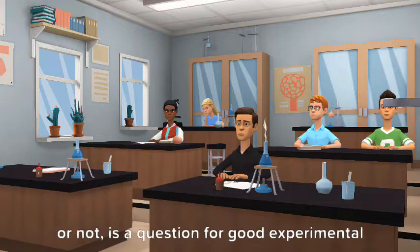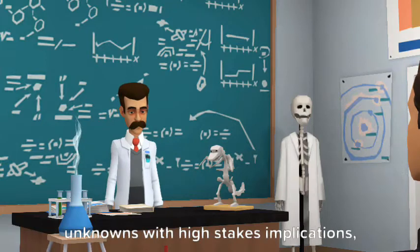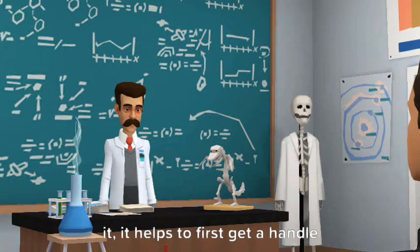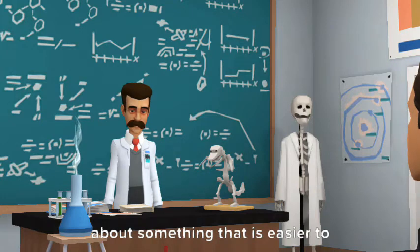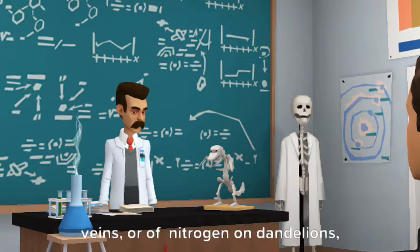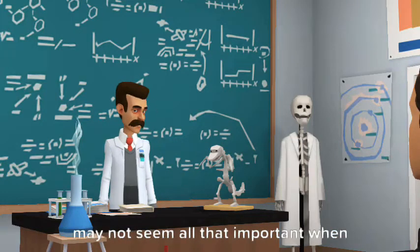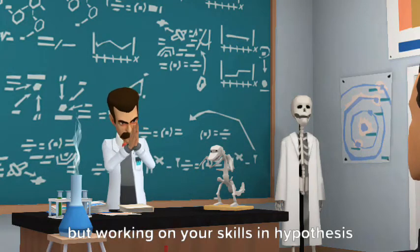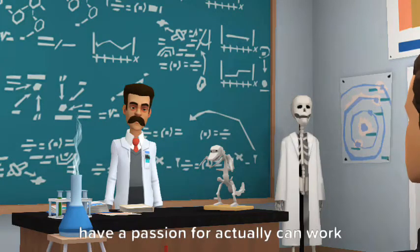Sometimes, if you are studying big unknowns with high-stakes implications, like climate change and ways to mitigate it, it helps to first get a handle on creating and stating a hypothesis about something that is easier to conceive. The possible effect of shoes on varicose veins or nitrogen on dandelions that are used in the examples may not be your area of interest, and may not seem all that important when you are trying to save the world. But working on your skills in hypothesis writing using something you don't have a passion for actually can work to your benefit,